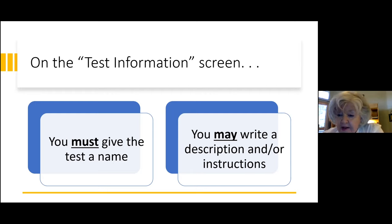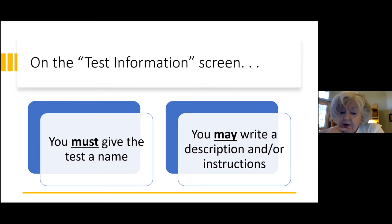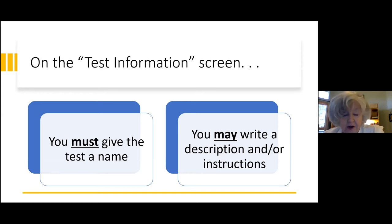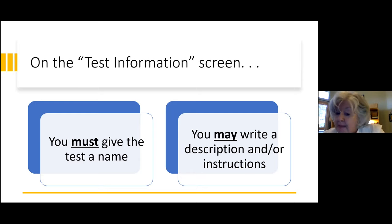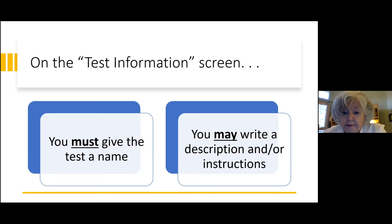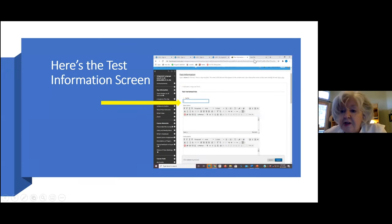Before we go to the screen, I want to alert you to something that is a pattern you'll see over and over in Blackboard. Blackboard uses a sort of must-may convention. Often on a screen, there are one or two things that you must do — you just can't move forward until you do. And then there are probably a bunch of things that you might do if you want — optional things. Many of those I ignore, but I'll talk about my favorite mays that I think are useful.